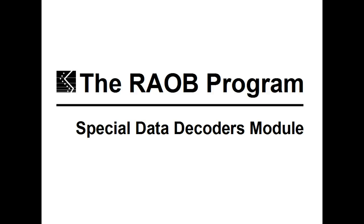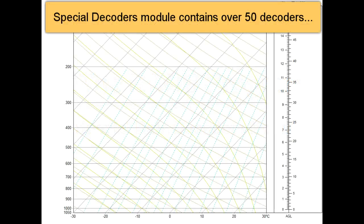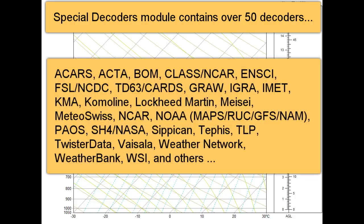This video is about RAOB's Special Data Decoders module. This module contains over 50 decoders for the world's most popular sounding data formats. Here is a list of the categories of special data decoders.